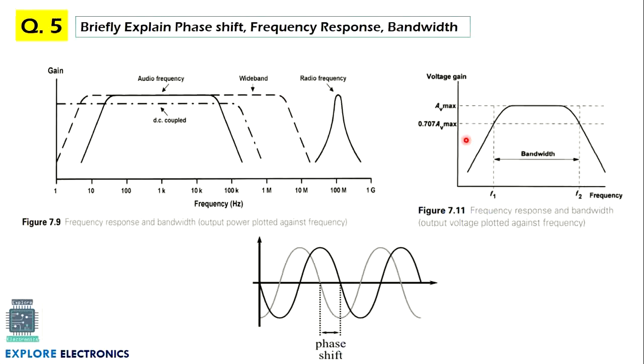Then we will be having some small concepts like frequency response, bandwidth, and phase shift of the amplifier signals. So this question may be asked for 4 to 5 marks to explain each and every concept: to explain what is bandwidth and how it will be represented, and what is the frequency response of any amplifier for a particular radio frequency amplifier. This is how the question may come, like to explain briefly the frequency response, bandwidth, and phase shift concepts.